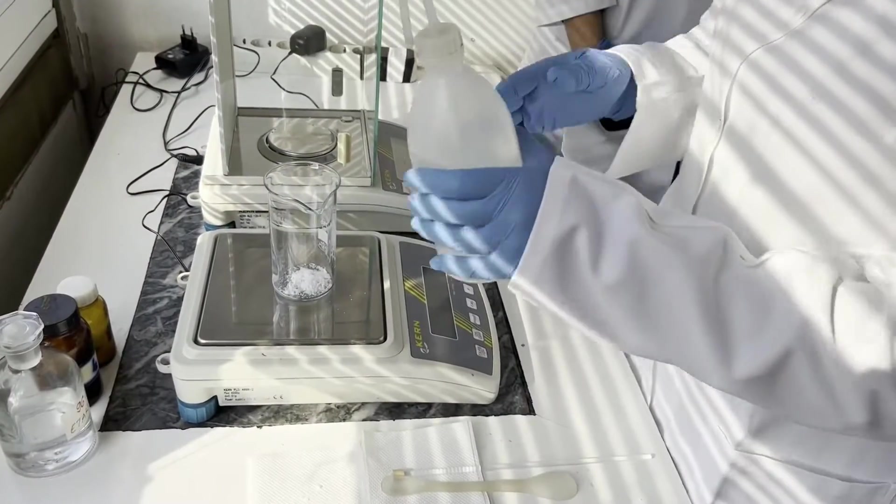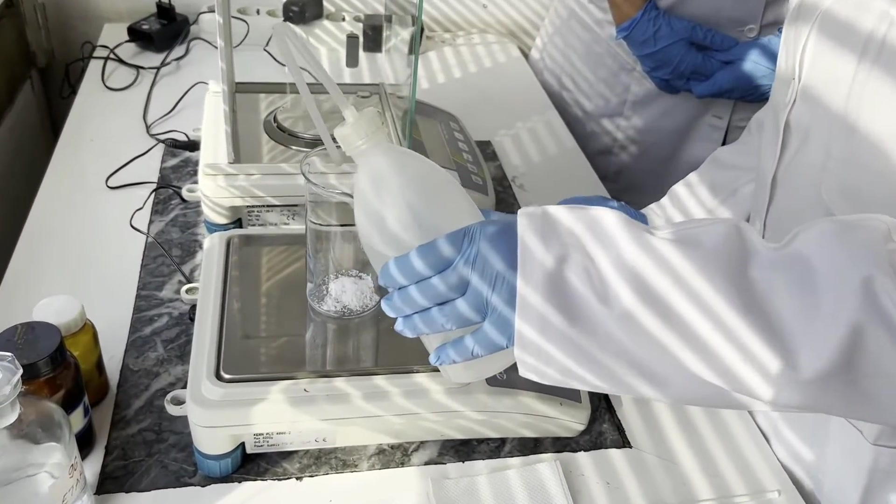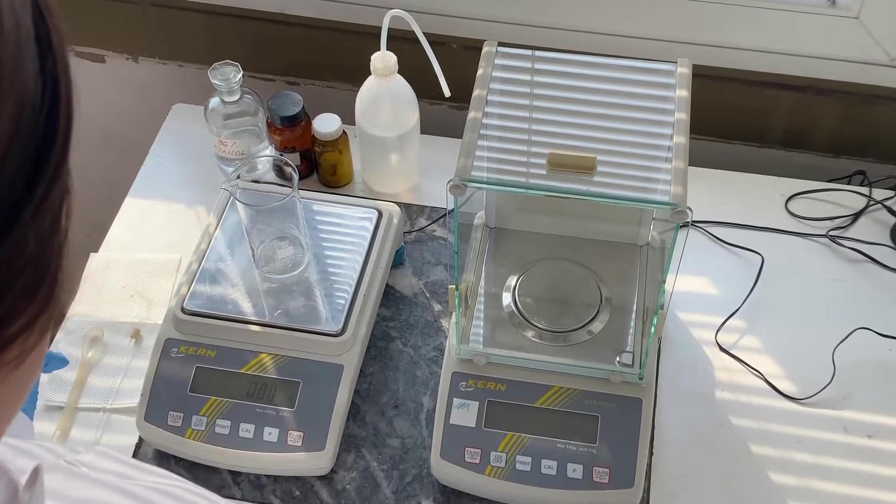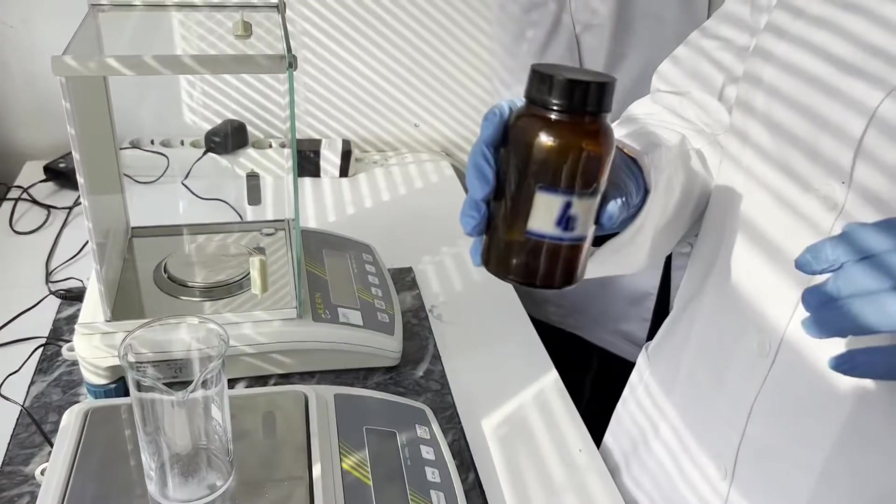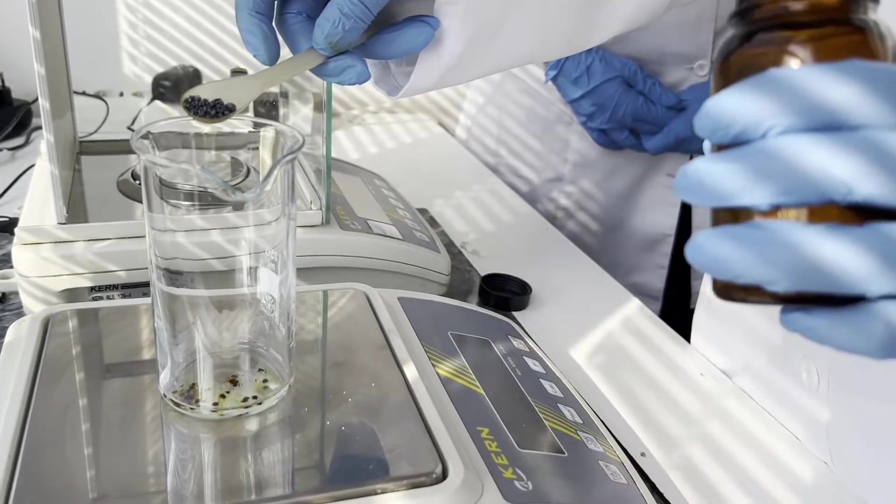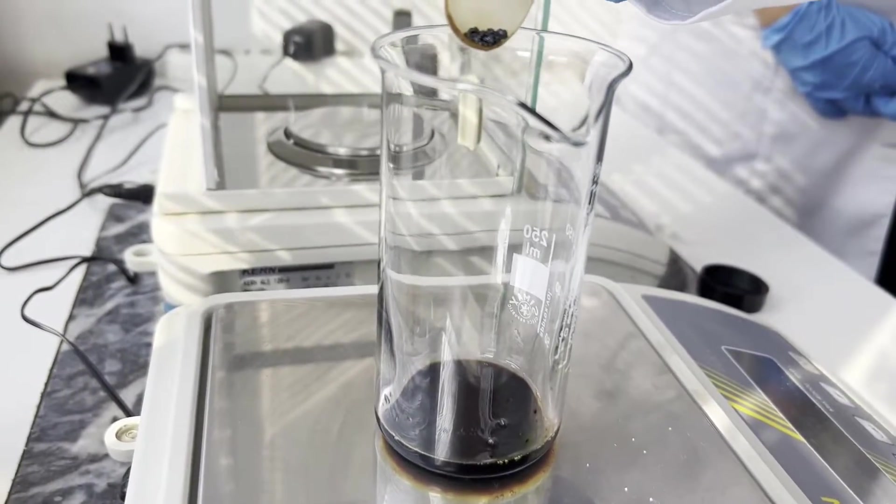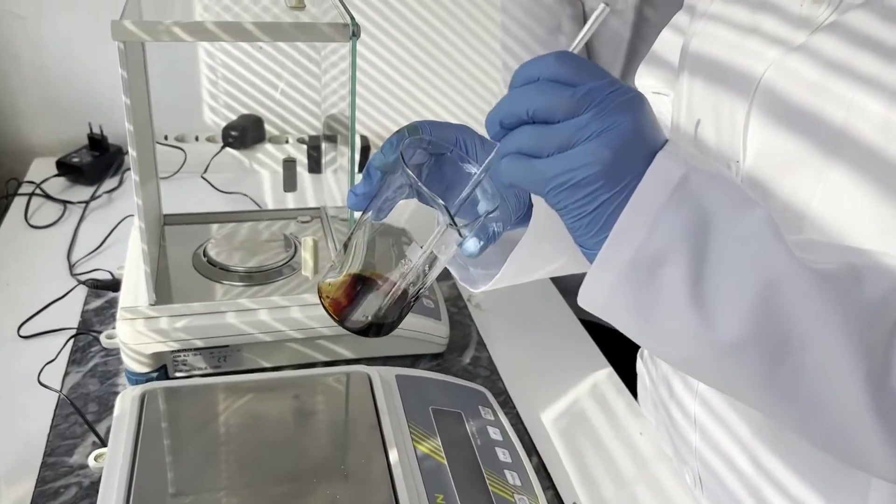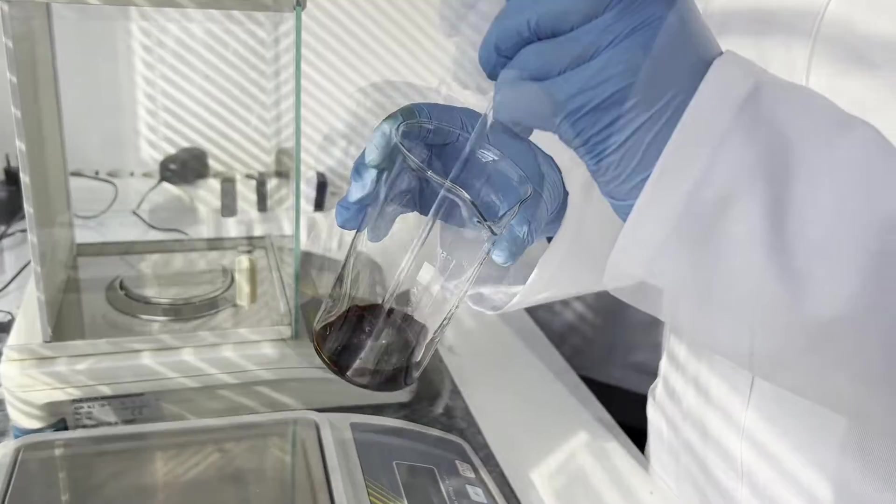Then we will tare again and pour 4 grams of distilled water into the beaker. Once we have made a solution we can go ahead and tare it again. We will now pour 5 grams of iodine into our solution. We will stir the solution with a stirring rod so all the iodine dissolves.